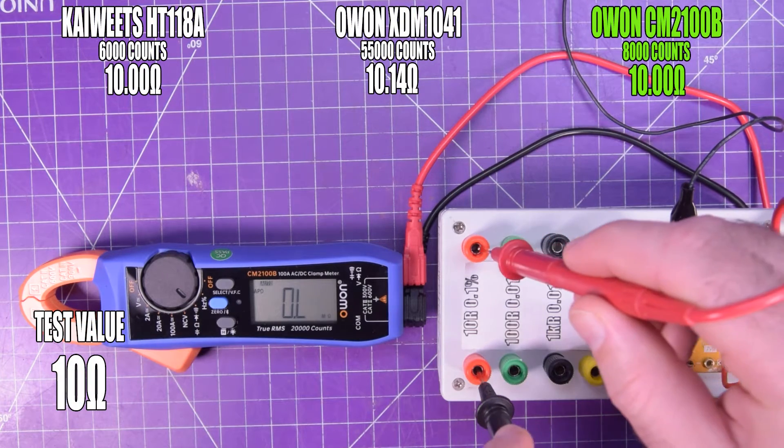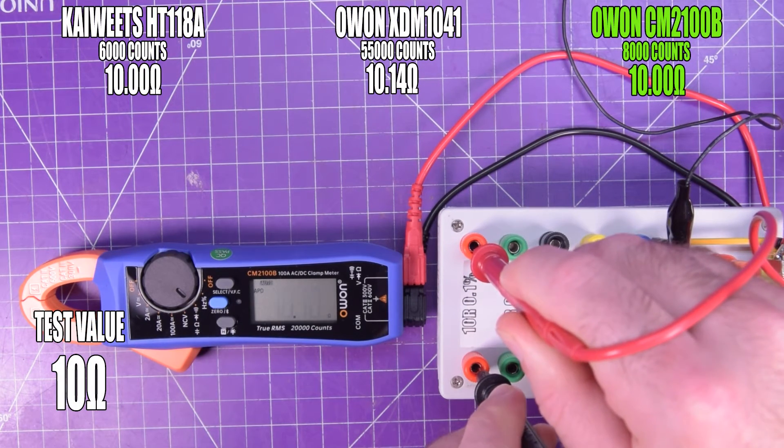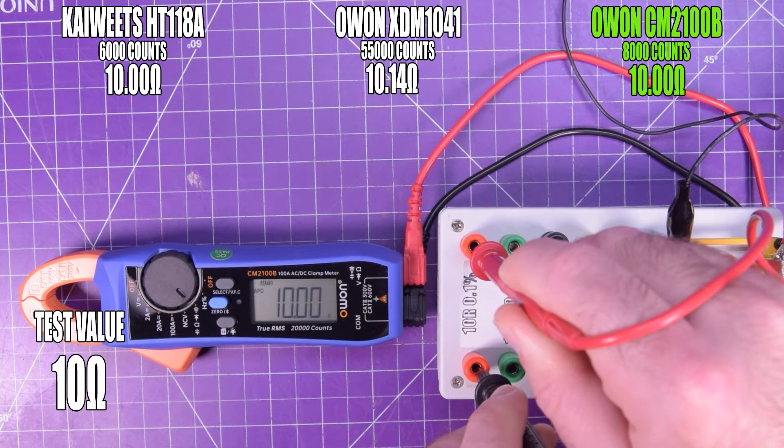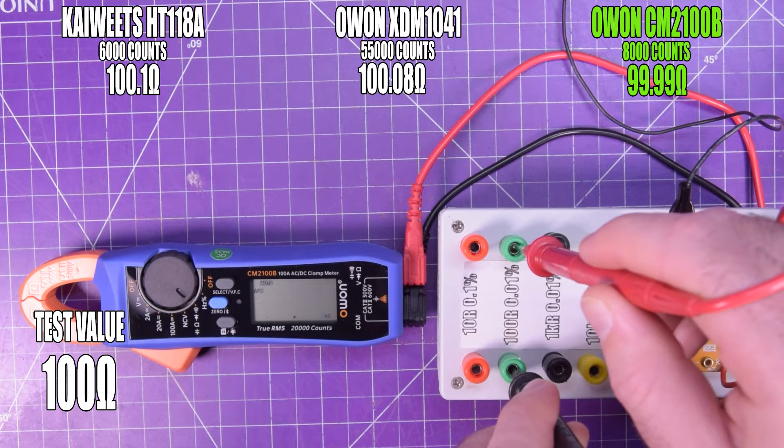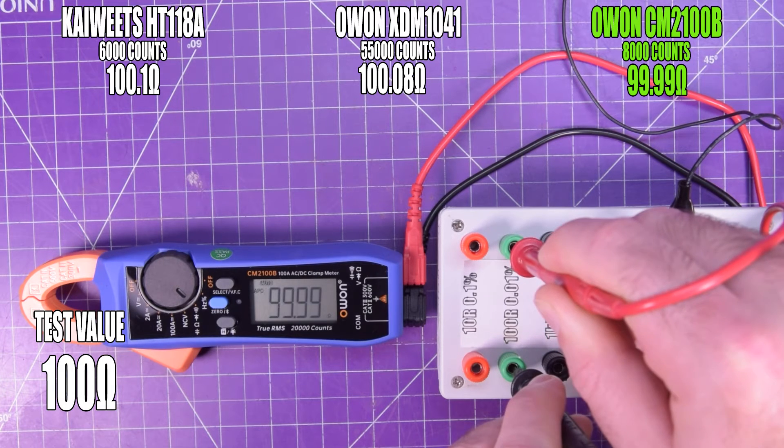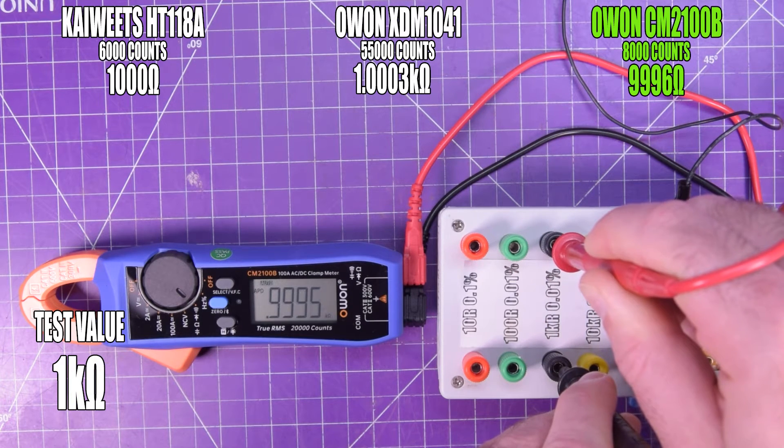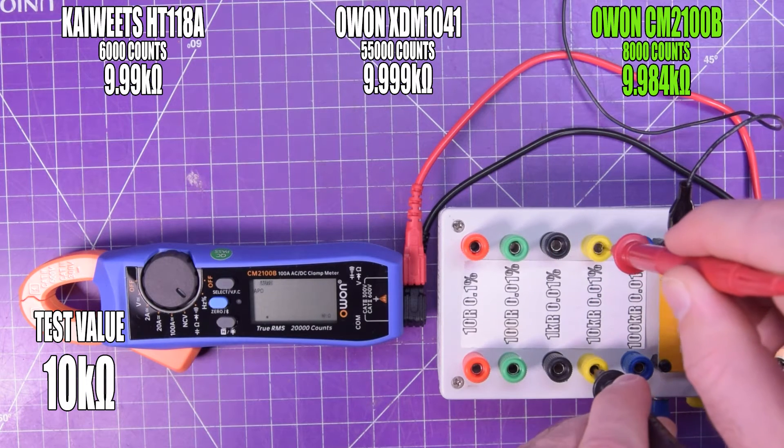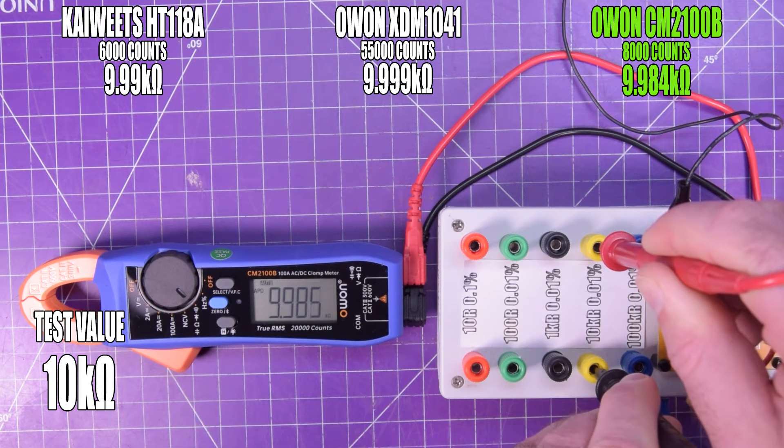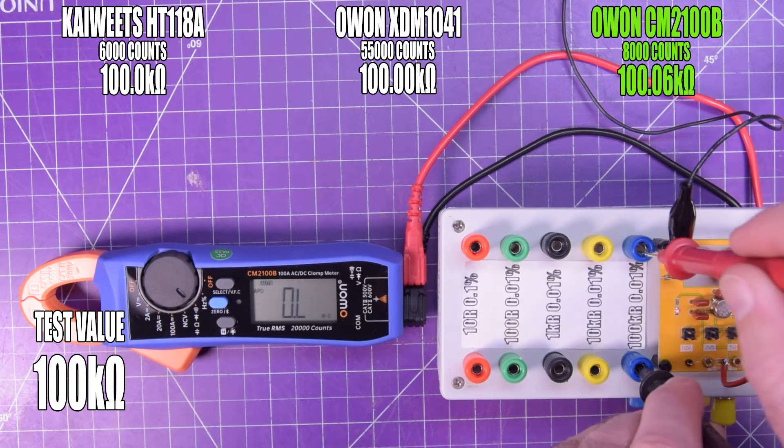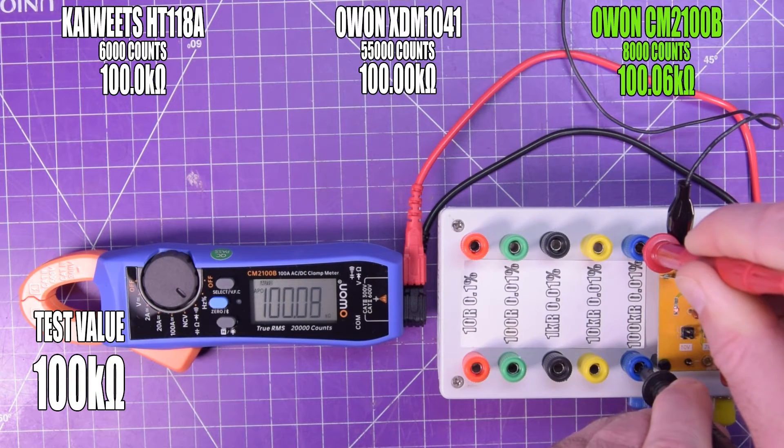So, on the 10 ohms, plus or minus 0.01, or 0.1%, pretty much 10 ohms, right on the money. For 100 ohms, 0.01%, pretty much 100 ohms, just shy. 1k, kind of bang on, just a little low. 10k, putting a lot of pressure on the probes here, and 100k. Almost bang on.